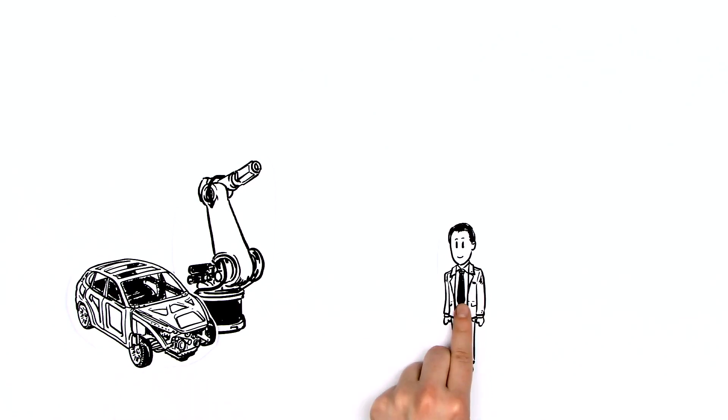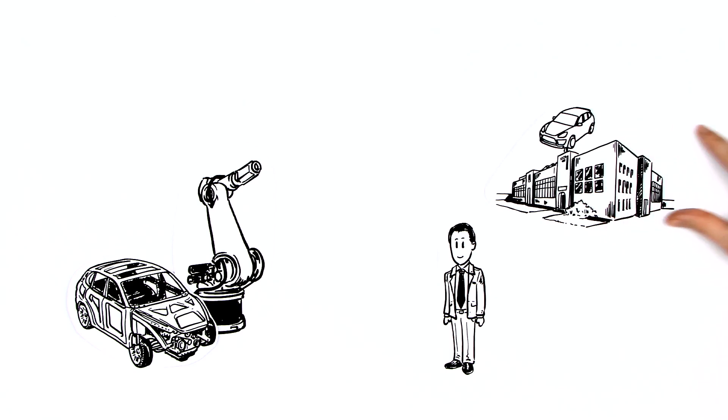This is KR 30, an industrial robot for producing automobiles. Mr. Newman would like to use it in his automobile factory.